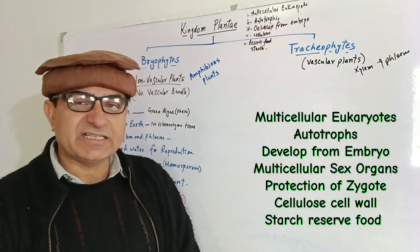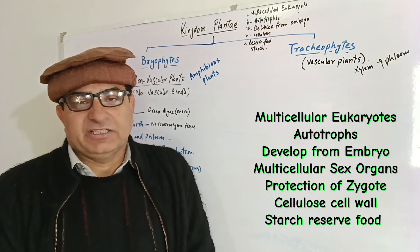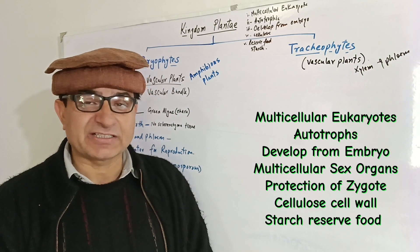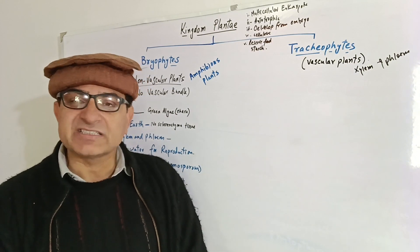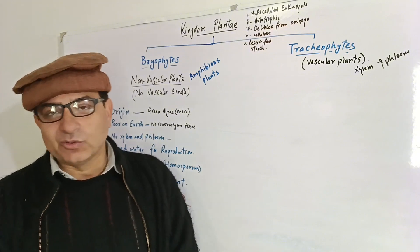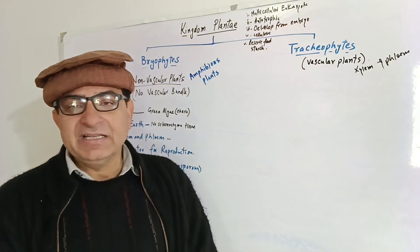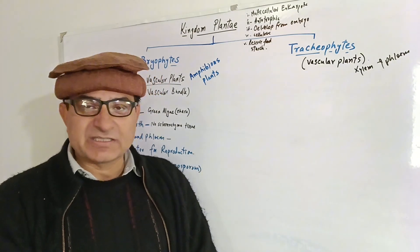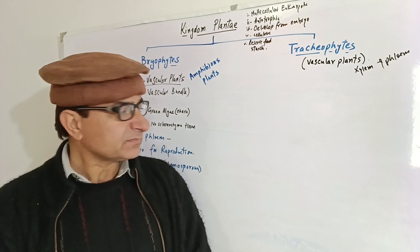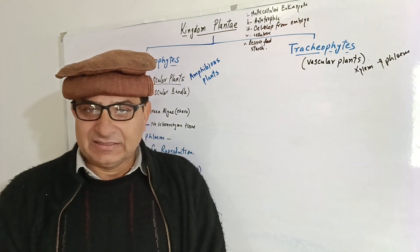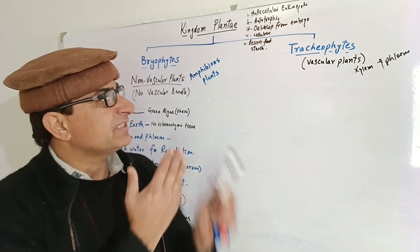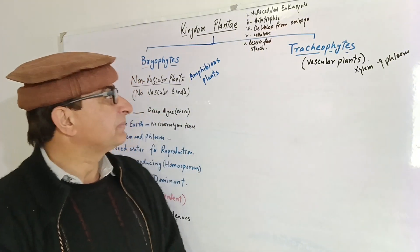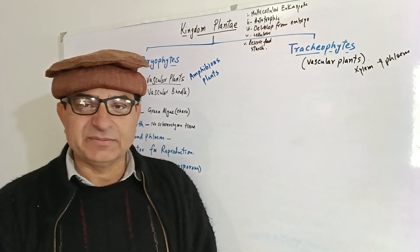In all these characteristics, organisms are placed in Kingdom Plantae. Those which do not have these characteristics — at least some of them, for example, if they don't have embryo, multicellular sex organs, and zygote protection — Kingdom Plantae is excluded from those organisms and now they are part of Kingdom Protista. Kingdom Protista is the kingdom of exclusion, because organisms were excluded from other kingdoms.